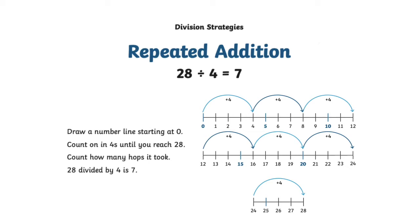Repeated addition: draw a number line starting at zero. Count on in fours until you reach 28. Count how many hops it took. 28 divided by 4 is 7.